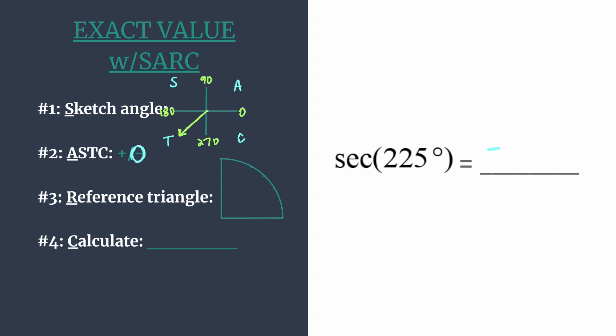First let's find the reference triangle, and we need our reference angle, which is just the amount of rotation from the terminal side to the x-axis. Think 225 minus 180. That's 45 degrees, so we're working with our 45-45-90 special right triangle.